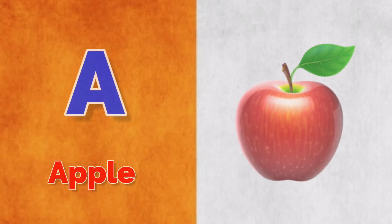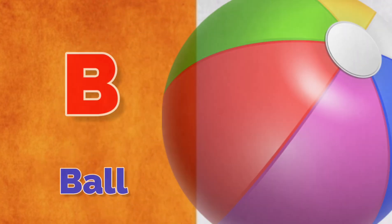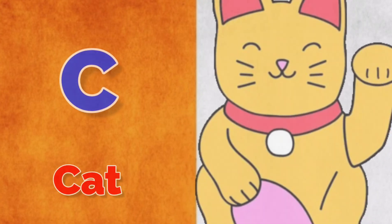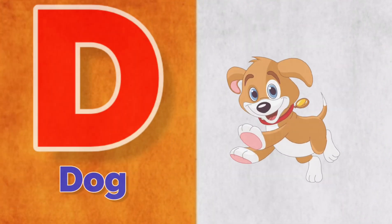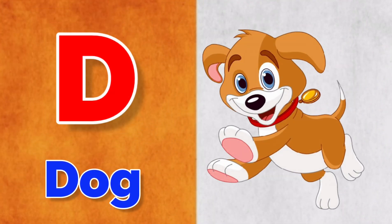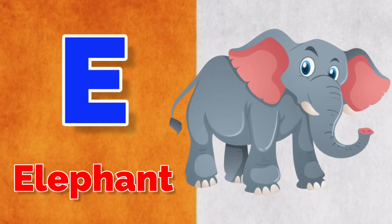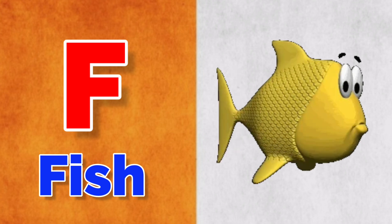A for apple, B for ball, C for cat, D for dog, E for elephant, F for fish.